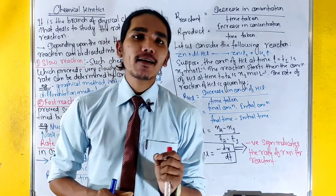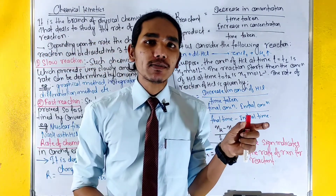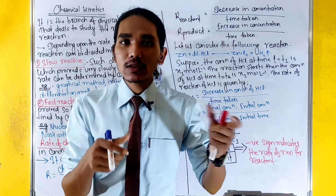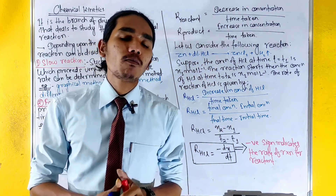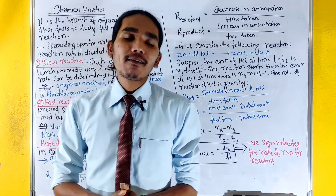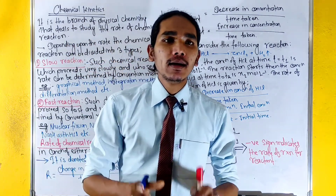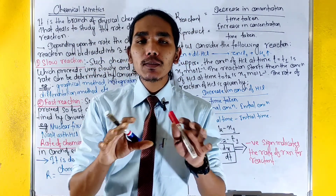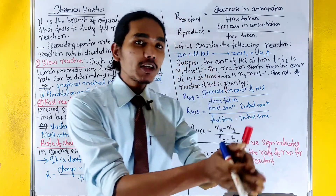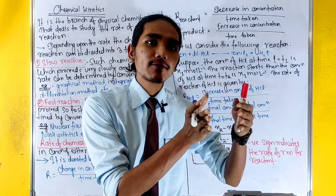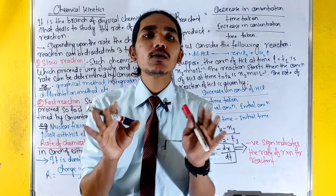Let's start with chemical kinetics. We need to understand the speed of reactions. Some reactions are very fast and some are slow. We need to study this as part of physical chemistry — the science of chemical kinetics. We need to explain the rate of reactions, and thermodynamics also tells us about the requirements of reactions.